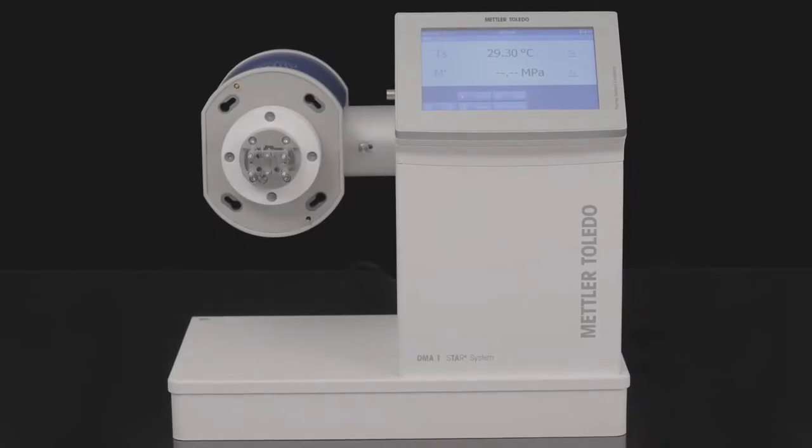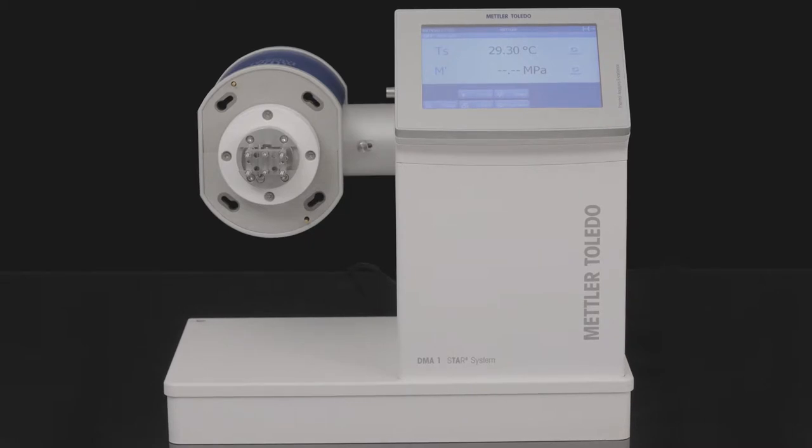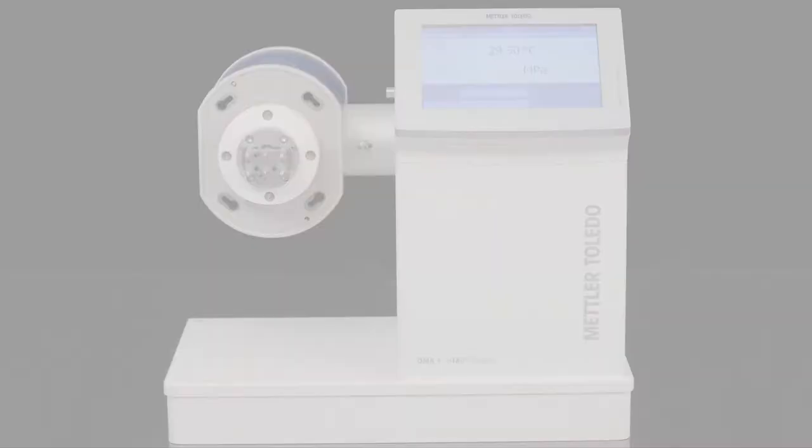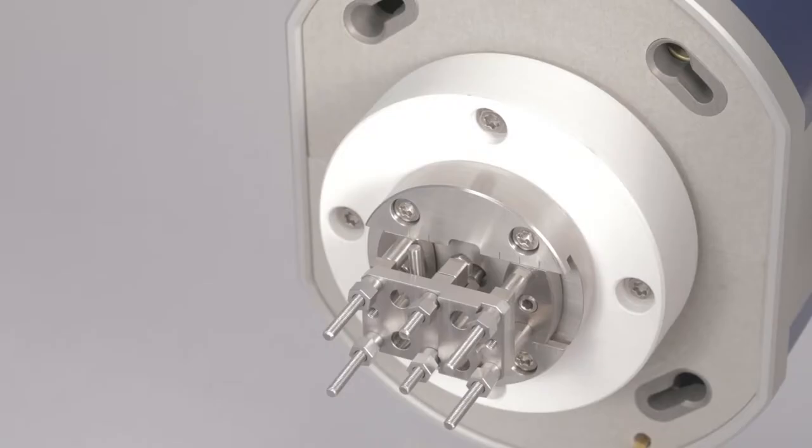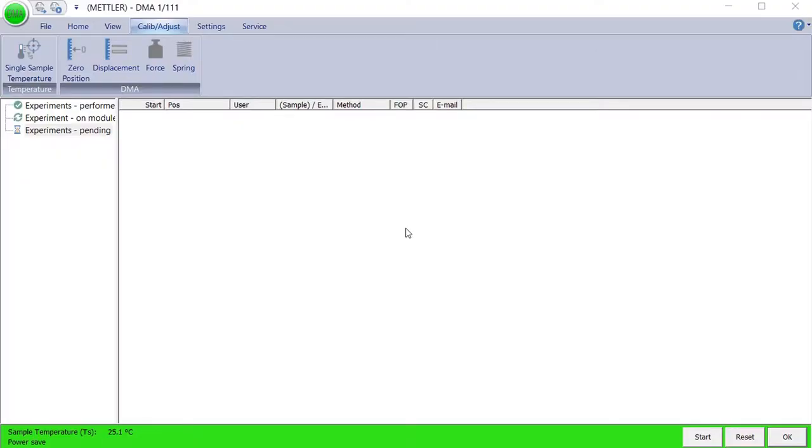DMA1 instrument with the measuring head in the horizontal position. Furnace left open. Bending sample holder installed and with the alignment insert mounted. In the module control window of the STAR-E software, start the adjustment by clicking Displacement Adjustment on the Calibration Adjust menu.